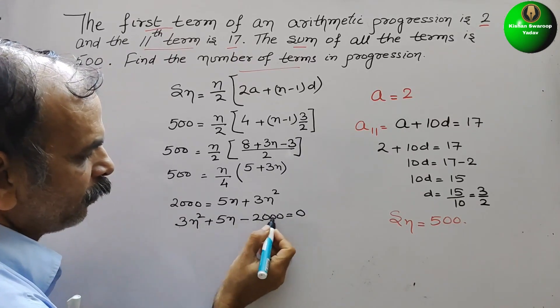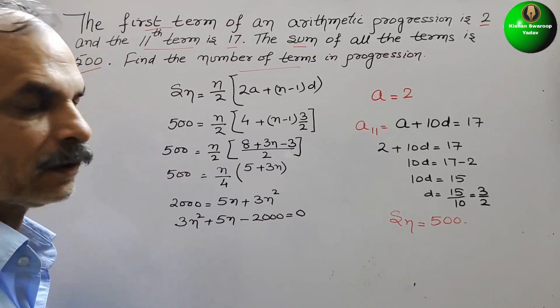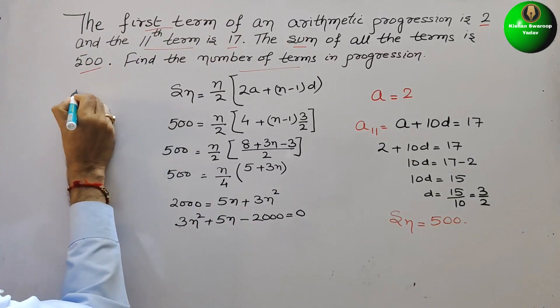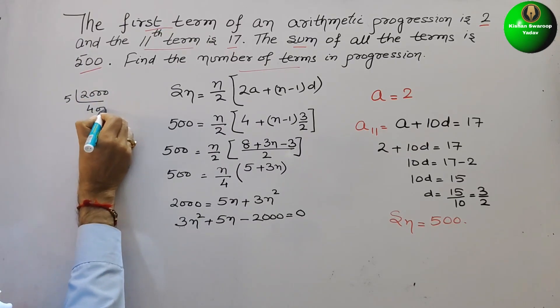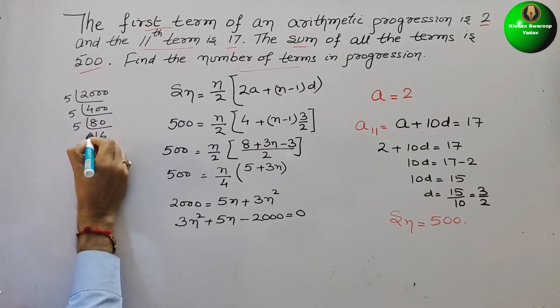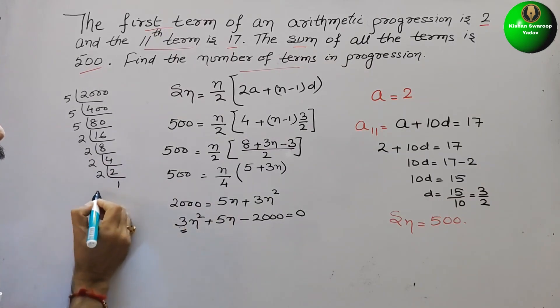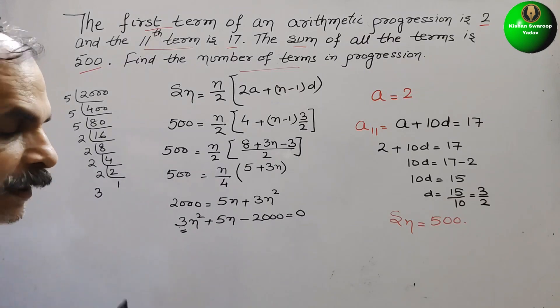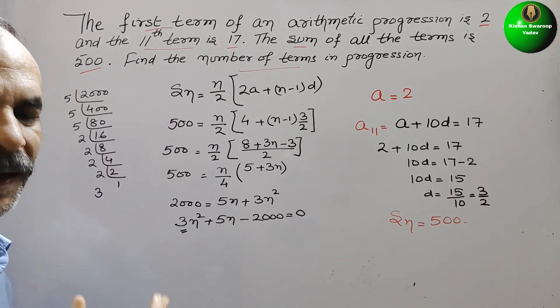So here we have to take out the factor of 3 into 2000. So we will take out the factor. So here comes your, see this, 2000. So 5, so it will come as 400. Next 5, it will come as 80. Next 5, it will come as 16. 2 is 8. Again 2 is 4. Again 2 is 2. Again 2 is 1. And this 3 also. So with the help of this, we have to find, we have to make it 5, that too plus 5.